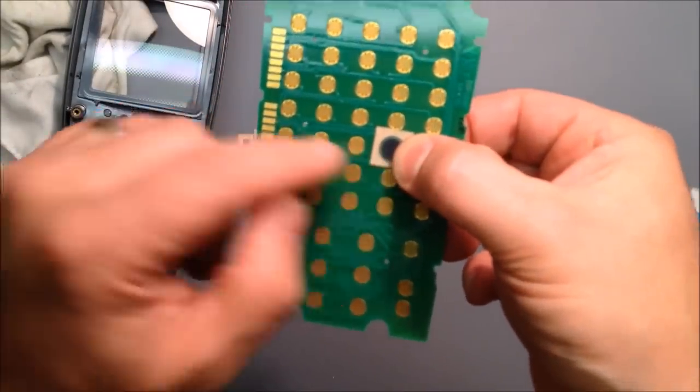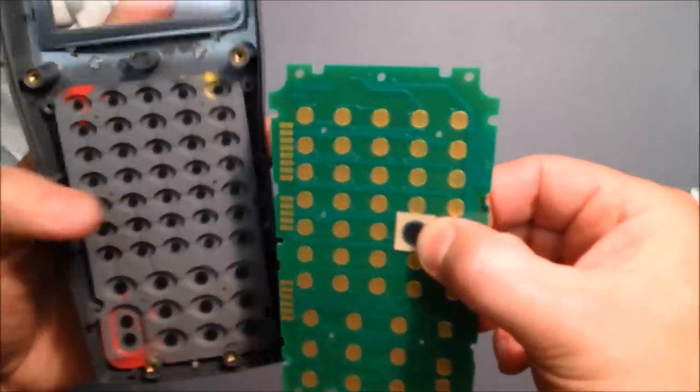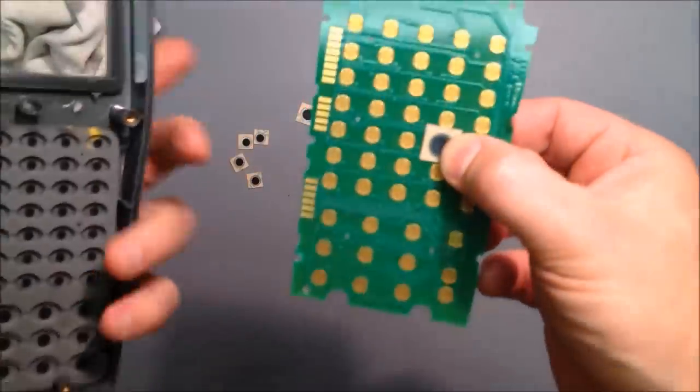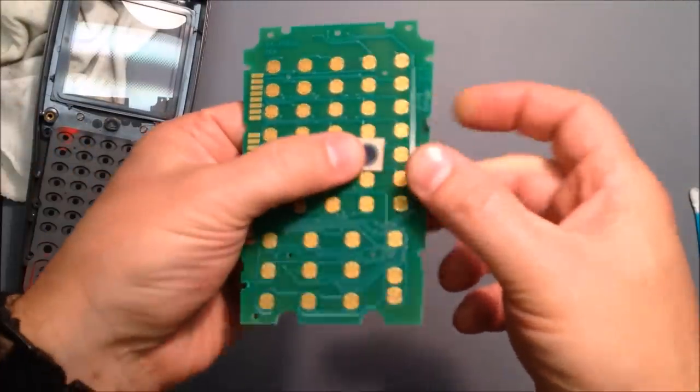And now this is what makes the contact. And it's sandwiched right in between your old rubber keypad. You can't even tell it's in there once it's reassembled.